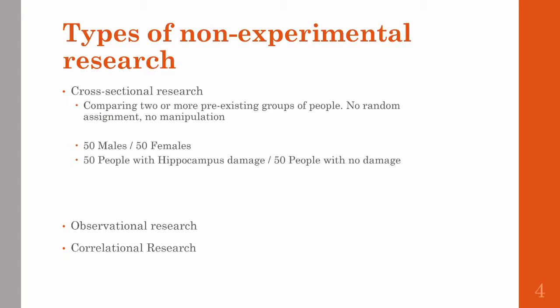These are quasi-experimental variables. You gather 50 males and 50 females and test them on something, or you find 50 people who have damage to their hippocampus and gather 50 people with no brain damage.